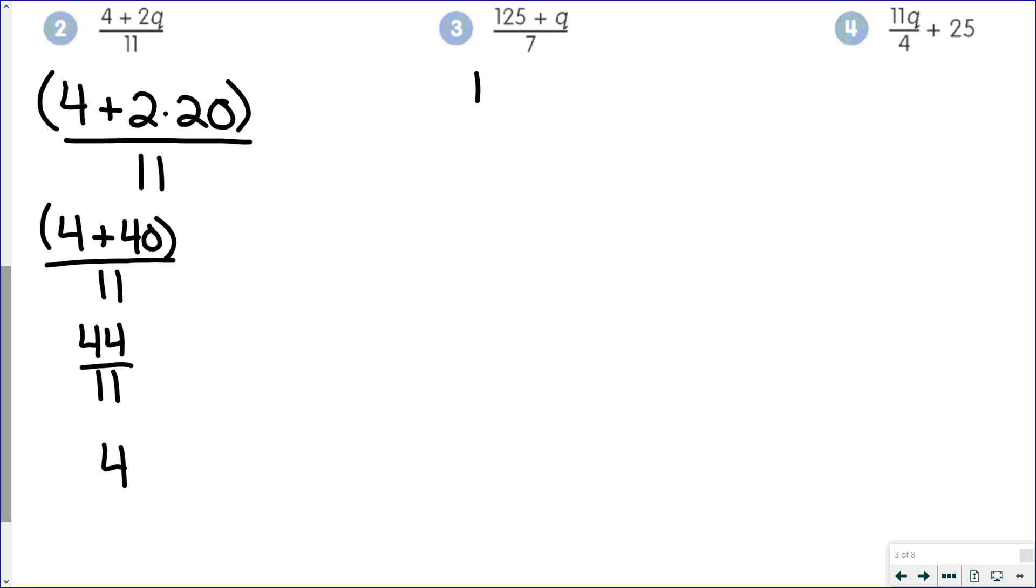I'd have 125 plus 20, that over 7. Again, you want to think about this as being inside parentheses. 125 plus 20 is 145. 7 goes into 145 twenty times. So you'd have 20 and 5 sevenths.